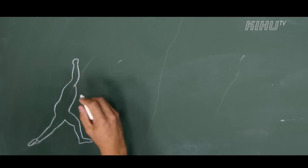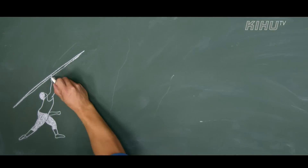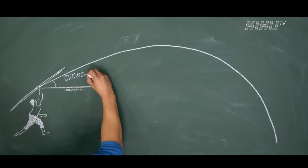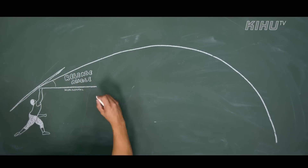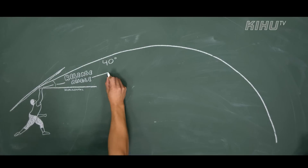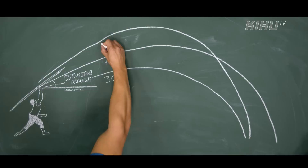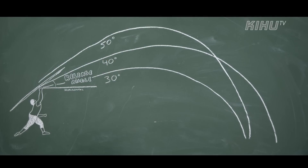Javelin release angle means the flying path of the center of mass of the javelin at the moment of javelin release. In theory, the optimal release angle for javelin is about 40 degrees. So 30 degrees is too small an angle, and 50 degrees is way too much.